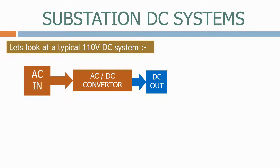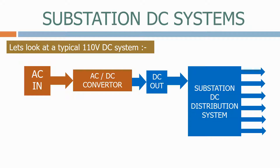We then convert the AC supply to a DC output using an AC to DC converter. The DC supply is then fed to the DC distribution system, which distributes the DC power to all of the equipment within the substation.